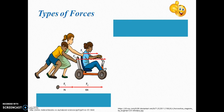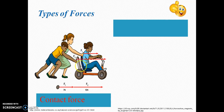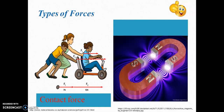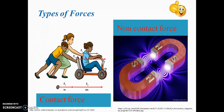Types of forces: In this picture you can see these two kids are applying force on this cycle by contact. So they are contacting this object and then applying the force — this is contact force. In the second picture, there are two magnets which apply force without any contact; they can apply attraction as well as repulsion without contact. So the second category is non-contact force.